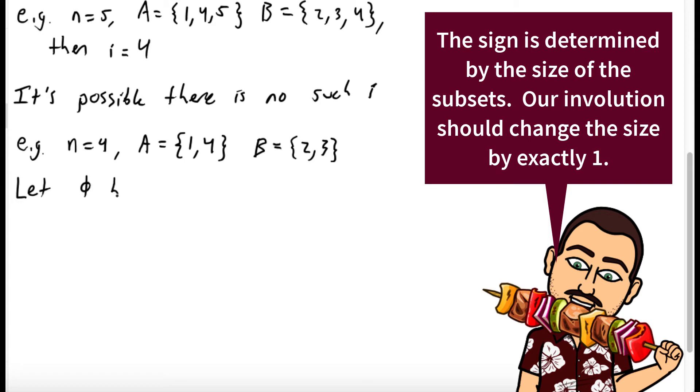Let phi be the map defined as follows. Phi maps the sets A, B to, and now there's going to be a few cases. It maps A, B to A union i, B union i, if i was not in either of them, so if i was not in the union of A and B.